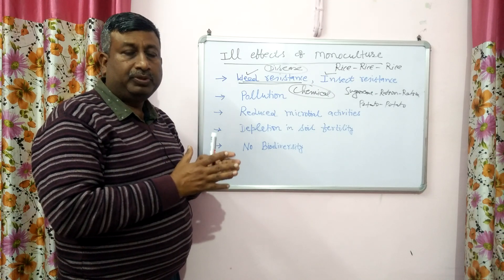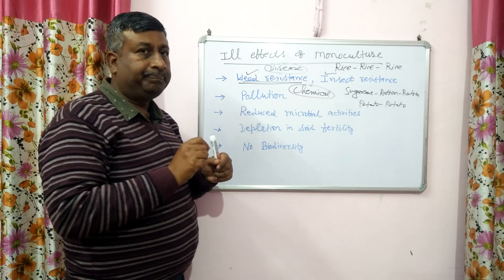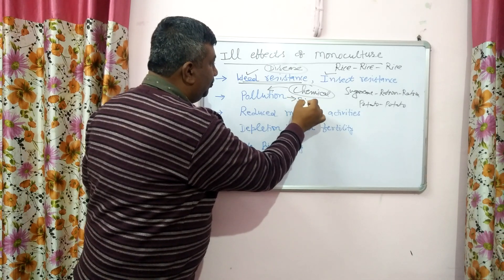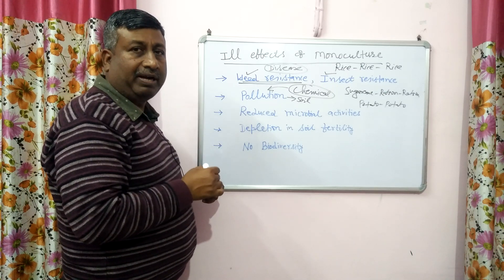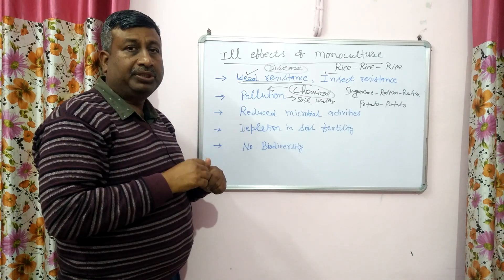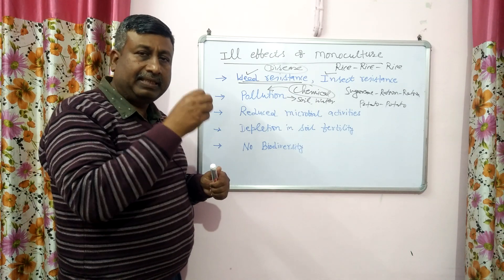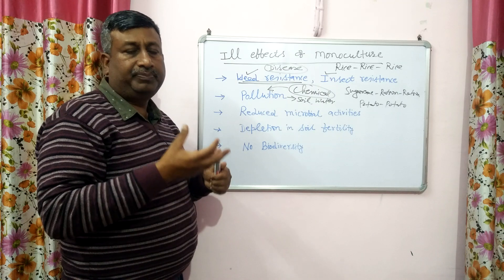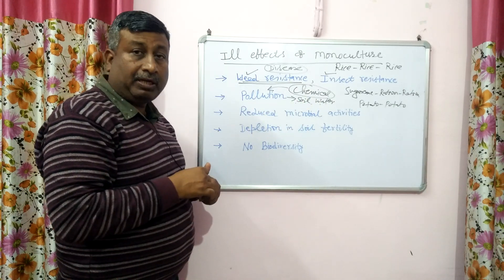The chemical load in the field increases, while the weed problem, insect problem, and disease problem all remain. Because of heavy chemical use, there is soil pollution. These chemicals percolate with water — leaching of chemicals occurs — and groundwater pollution also occurs. So this is another problem associated with monoculture areas. We apply more chemicals to control weeds, insects, and disease, and these chemicals reach the groundwater. If we use this water for drinking purposes, it creates another type of problem. So soil pollution, water pollution, and environmental pollution are all associated with monoculture.